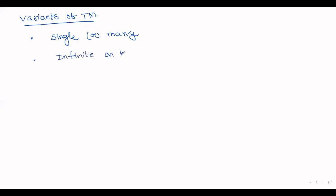This is one variation. Another variation is infinite on both ends. Up to now we know that when constructing a Turing machine, the length of the tape is generally infinite, but we write our string from the starting of the tape and only the right side is infinite. But there is one more variation: a Turing machine that is infinite on both ends.